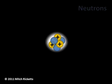Other particles in the nucleus are called neutrons. As their name implies, neutrons are electrically neutral, meaning they have no net positive or negative electrical charges.